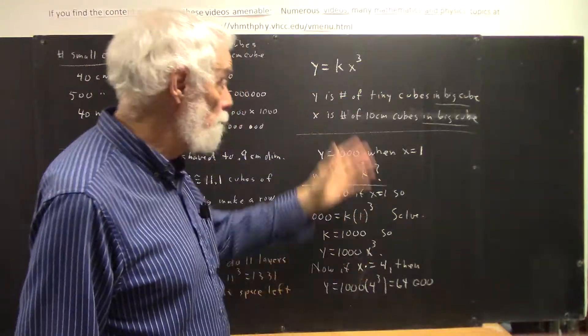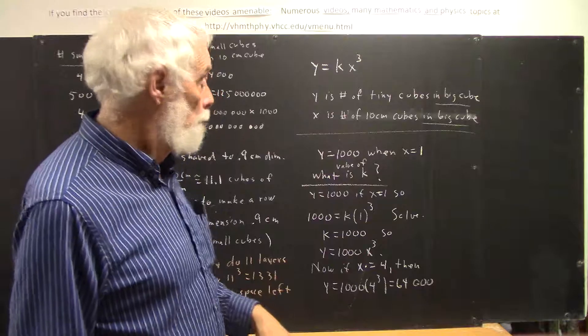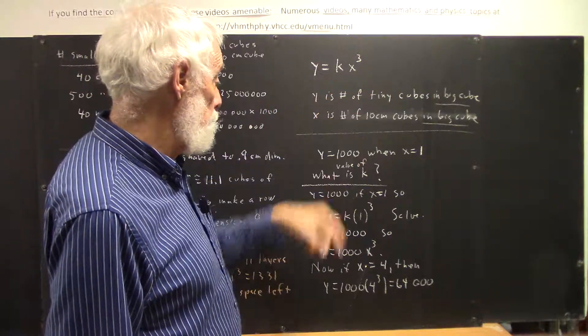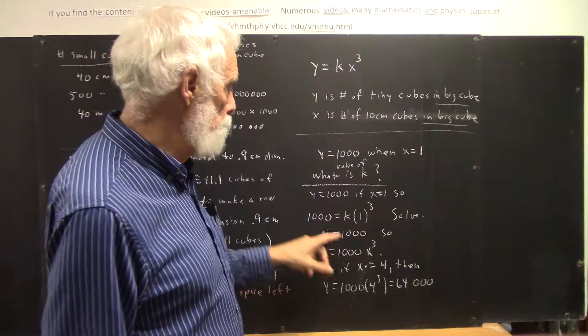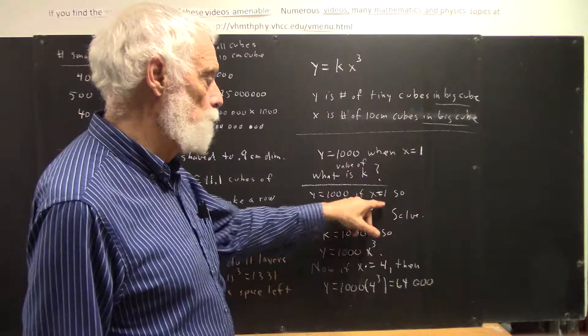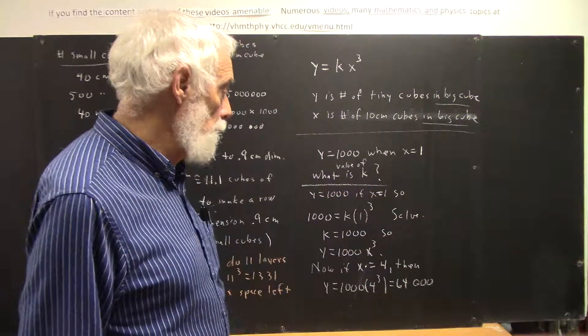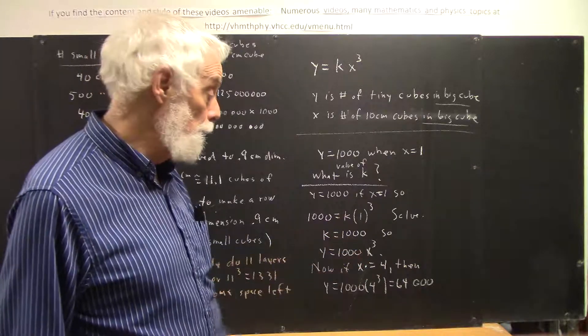We've just been over enough algebra that that should be fairly simple. So our equation that we get, y equals 1,000 if x equals 1, so 1,000 should equal k times 1 cubed. We solve that, well, the solution is clearly k equals 1,000.